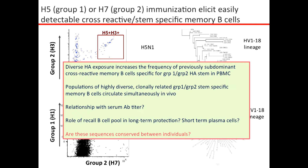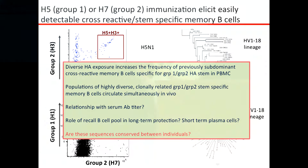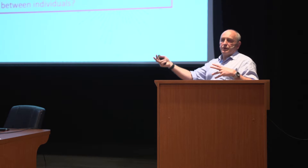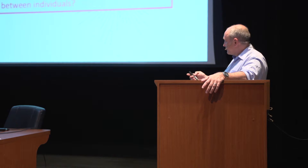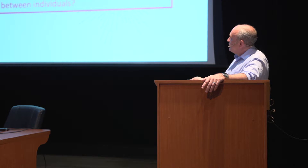Diverse HA exposure increases the frequency of previously subdominant cross-reactive memory B cells for group 1 and group 2 stems. Populations of highly diverse clonally related group 1/group 2 stem-specific memory B cells circulate simultaneously. But what's the relationship with serum antibody titer? Stem-specific antibodies are a thousand times less than head-specific antibodies. What's the role of the recall B cell pool in long-term protection? Are these memory B cells just differentiating into short-term plasma cells that do their job briefly and never reside as long-term memory in bone marrow? And how are the heavy chains conserved among individuals?